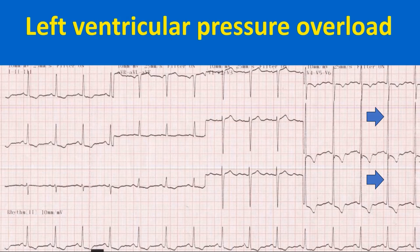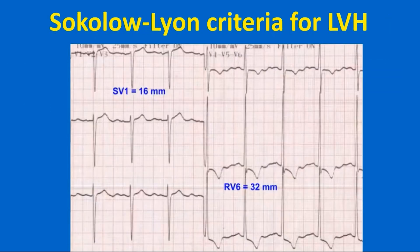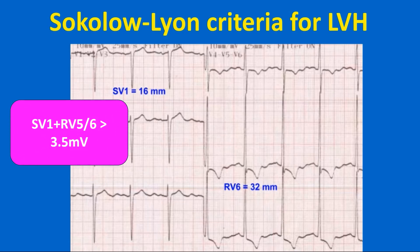The R waves in V5 and V6 are so tall that they overlap with tracings in the channel above. ST segment depression and T wave inversion are seen in inferior and lateral leads. Sokolov-Lyon criteria for left ventricular hypertrophy is one of the commonly used, though not very specific criteria. It can be stated as follows: S wave in V1 plus R wave in lead V5 or V6 more than 3.5 mV, or R wave in V5 or V6 more than 2.6 mV.